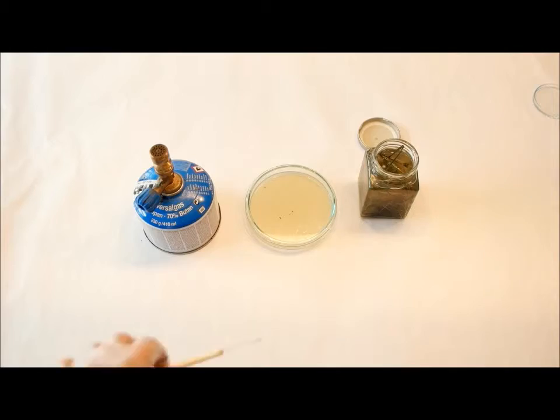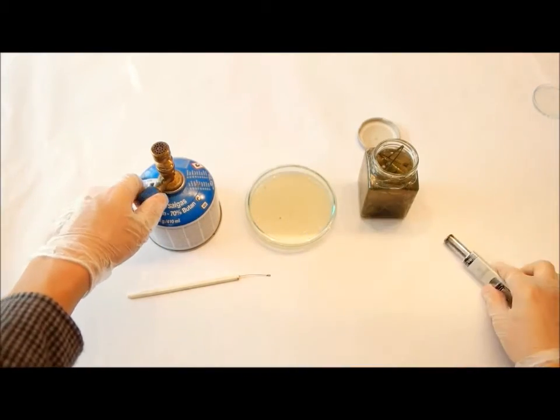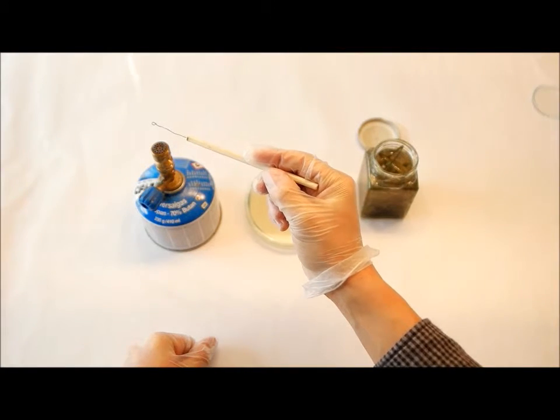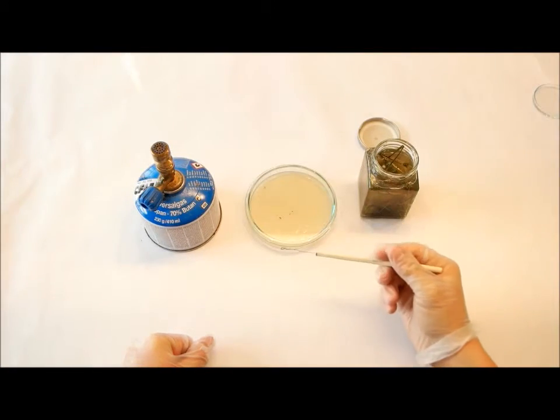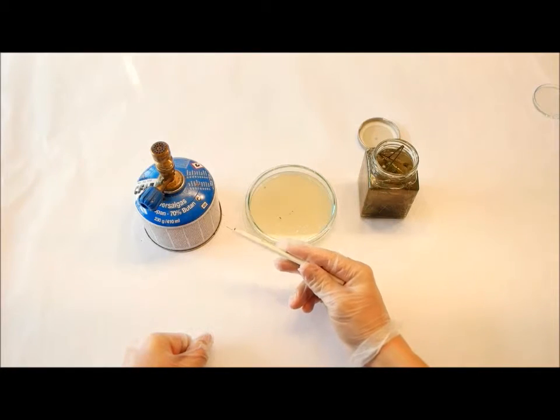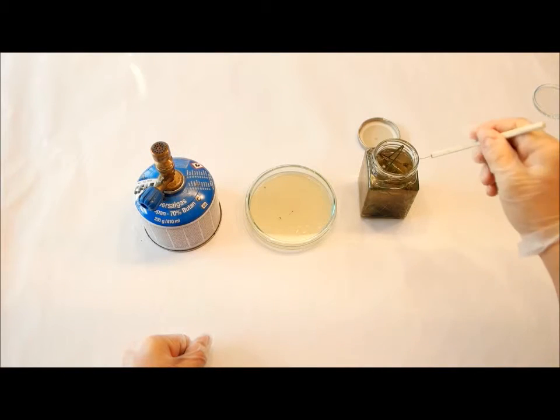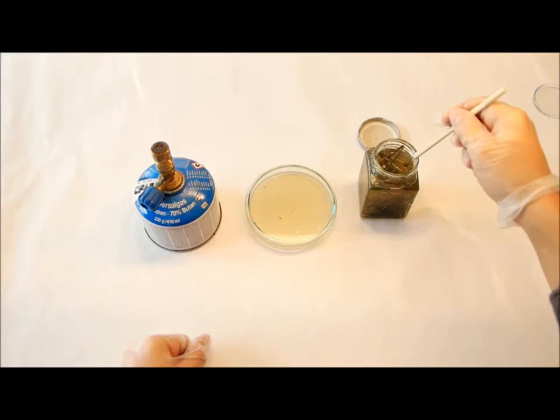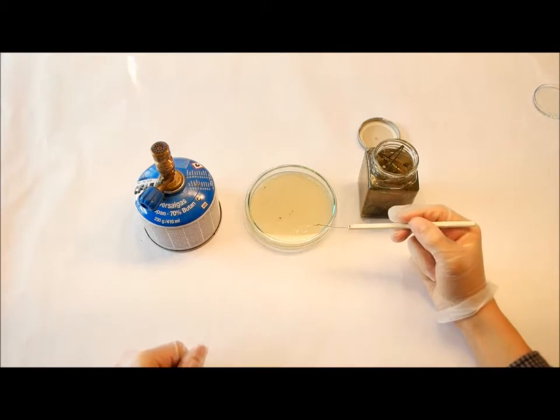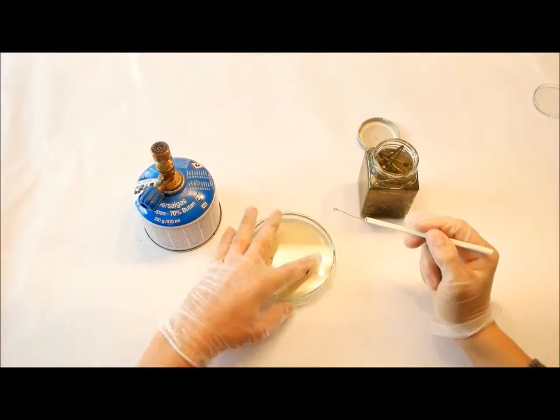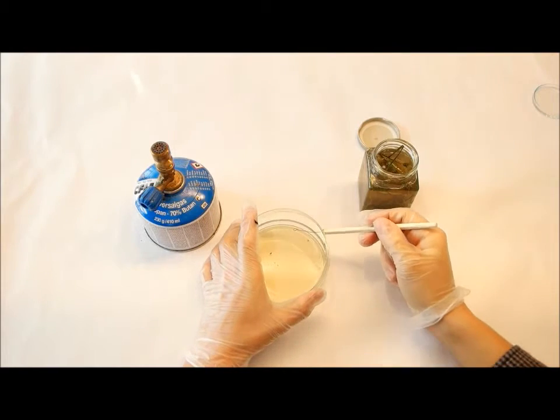So now light your Bunsen burner and sterilize your loop, the inoculation loop. Then let it cool for a good time. And then take a little drop of your bacteria suspension like this in your inoculation loop. And start by making those nine lines on your agar plate. So I start here.